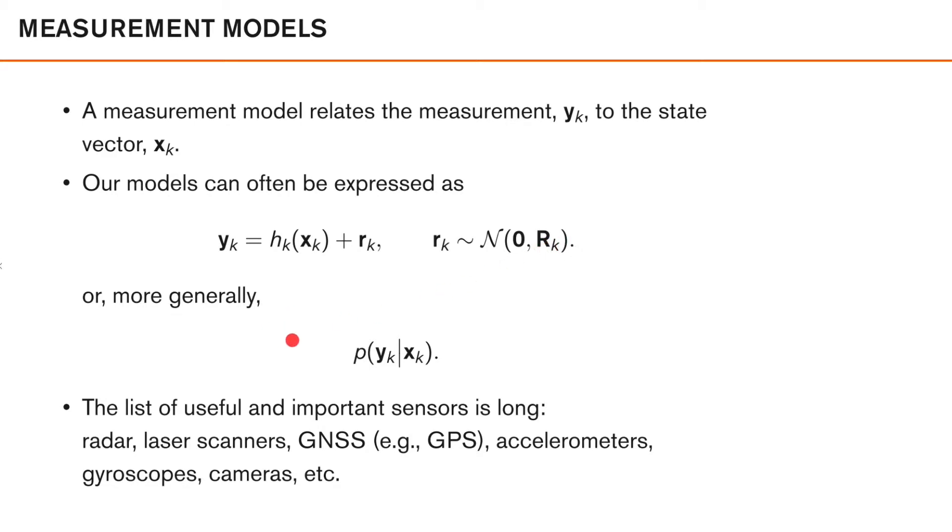However, more generally, we can also write this as this density here, the density of yk given xk. So it describes the density of the measurement given that we know the state vector.